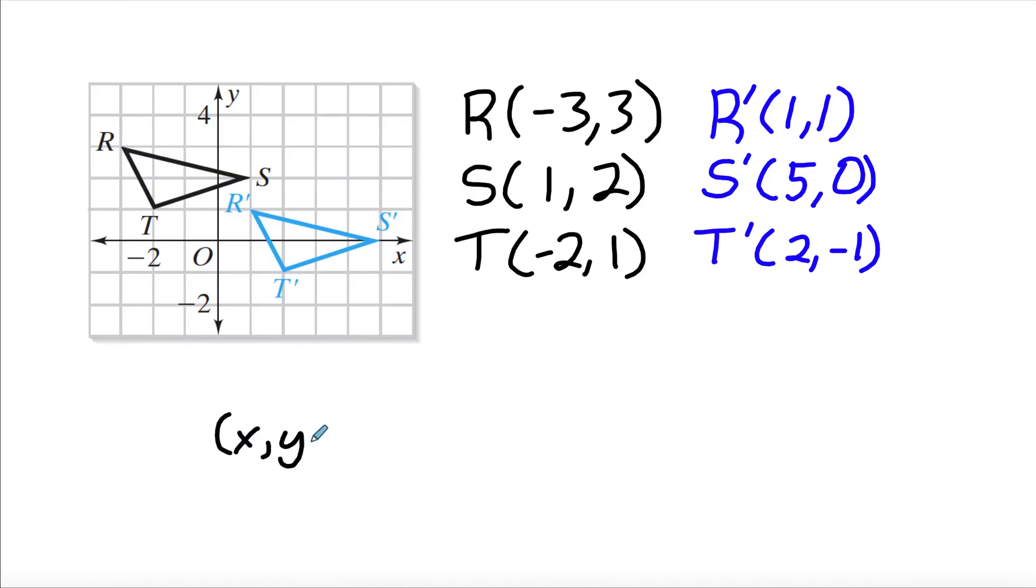So I'm going to put X, Y, and then draw my arrow. I'm going to put X. And since it's moving to the right four, I'm going to put X plus four.